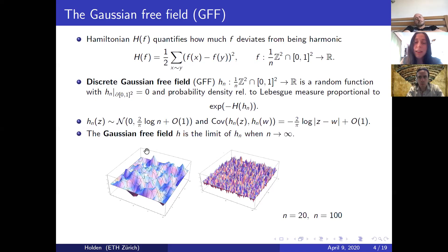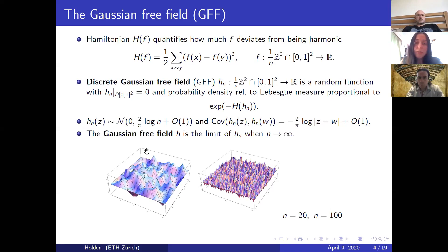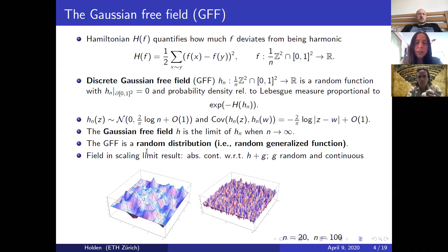One way to define the continuum Gaussian free field is to say it is the limit of the discrete GFF when N goes to infinity. The value at any fixed point is diverging because the variance is diverging logarithmically in N. Therefore, it's not possible to make sense of the continuum Gaussian free field as a function. But the Gaussian free field is well defined as a generalized function or a distribution — it's not possible to evaluate the GFF pointwise, but it is possible to integrate it against some smooth test function. The field arising in the scaling limit result presented later is actually not exactly a GFF, but rather a variant obtained by starting with a GFF, adding some random continuous function, and doing some absolutely continuous re-weighting of the probability measure.